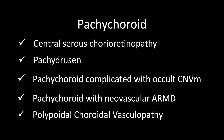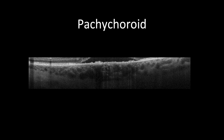OCT is the tool of choice to detect changes in thickness and structure of the choroid. In pachychoroid, the choroid increases in thickness between 271 to 278 microns and higher, with dilated Haller's layer, and sometimes there is compression of the Sattler's layer. Pachychoroid changes are not limited to the choroid but can be combined with pigment epithelial detachment (PED).